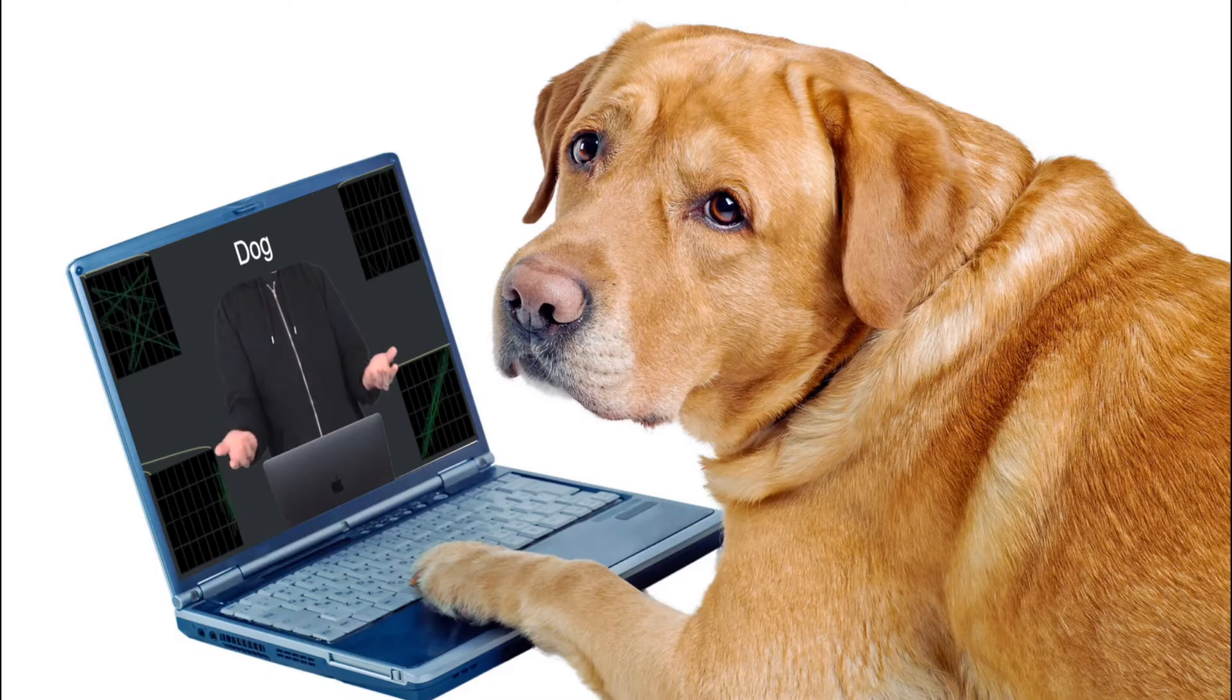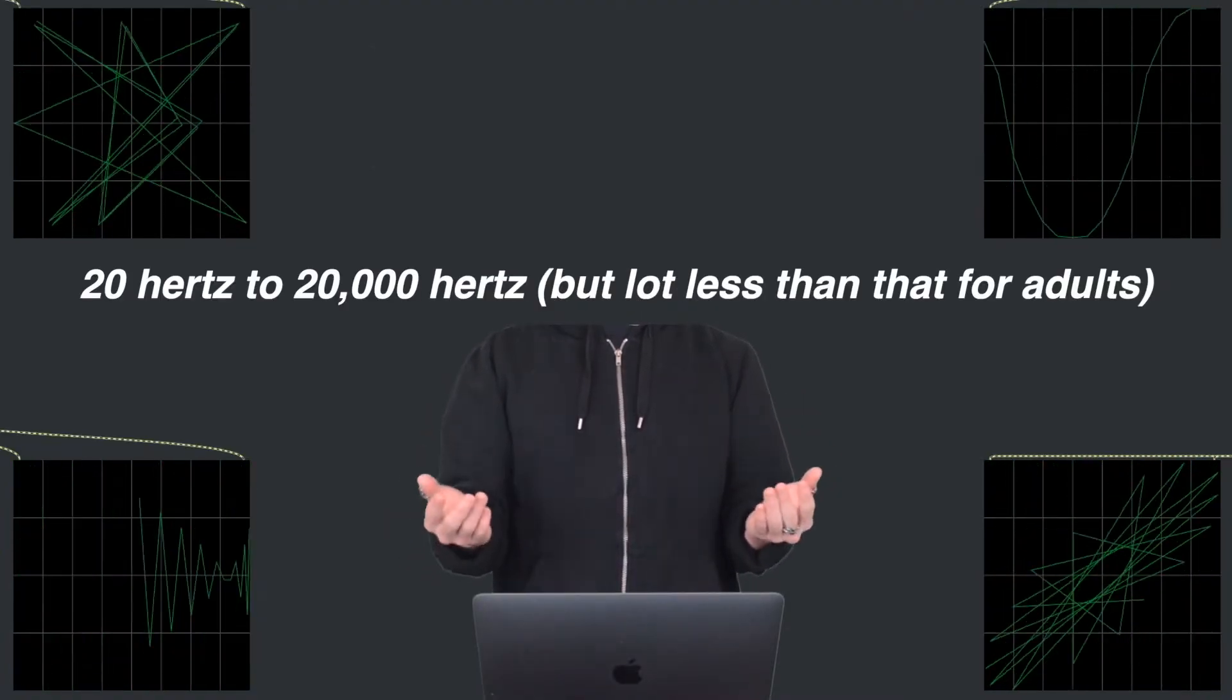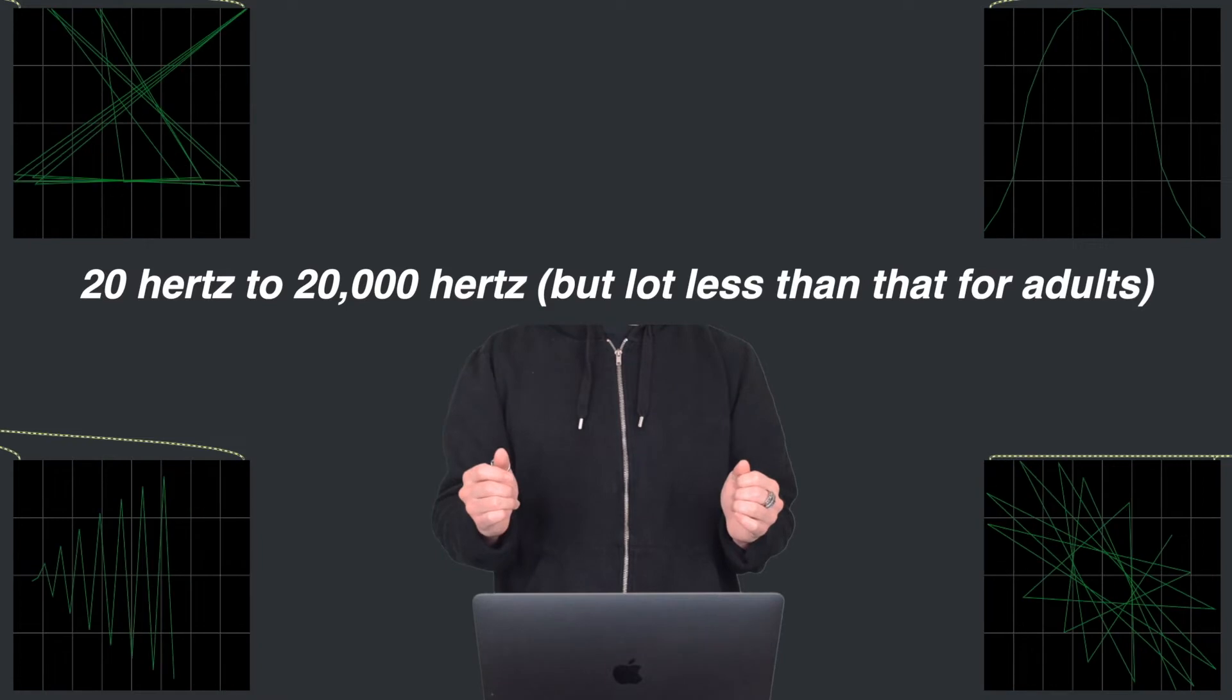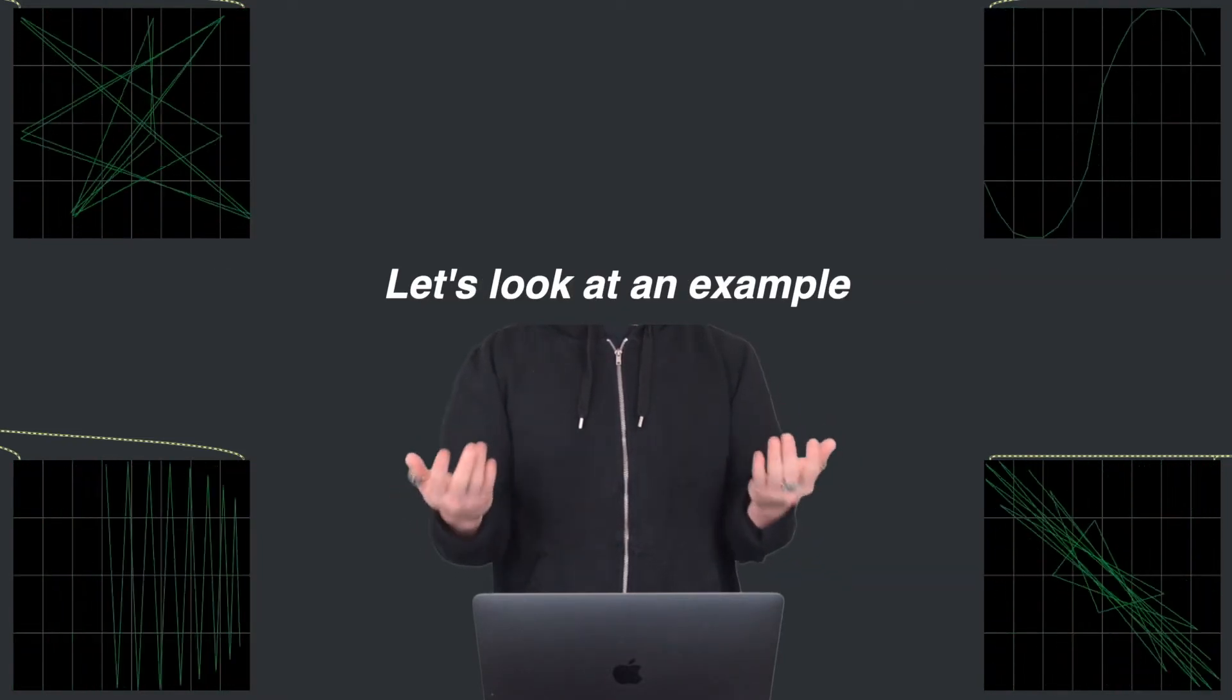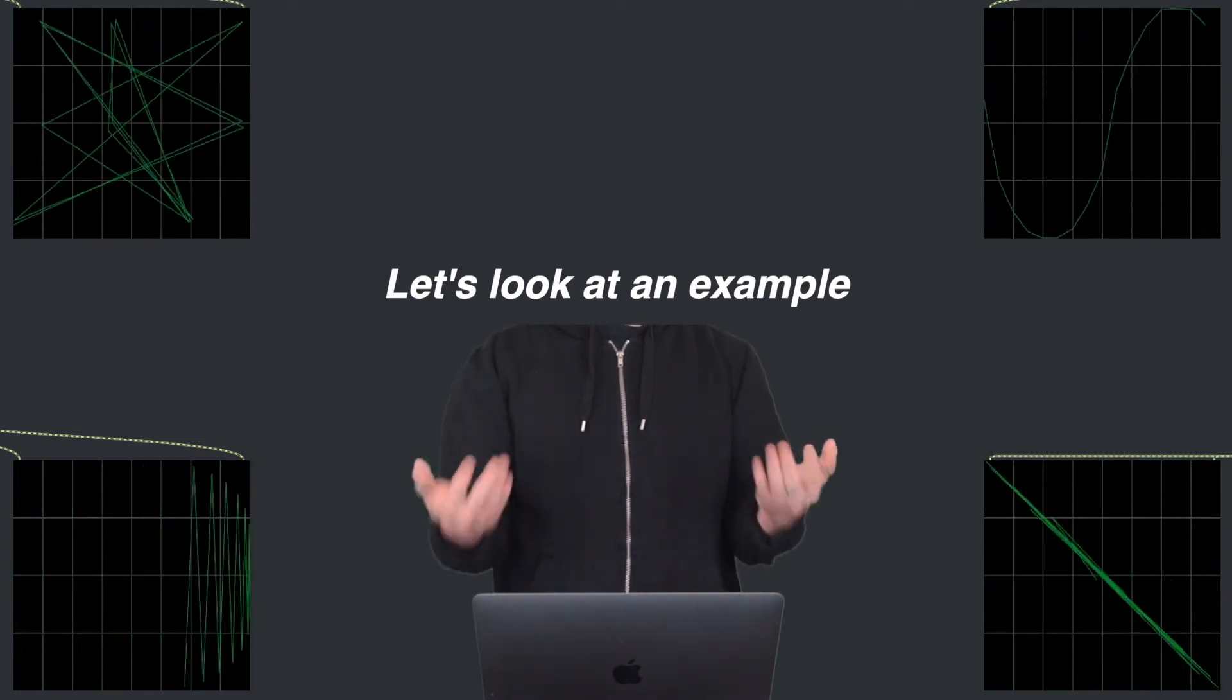Unless you're a whale or a dog watching this video, our range of hearing is from 20 hertz to 20 kilohertz. To better understand frequency content and spectrum analyzer, let's take a look at this trap beat that I quickly cooked up.